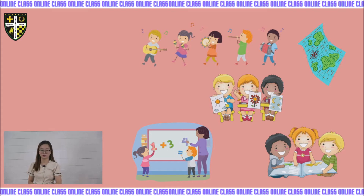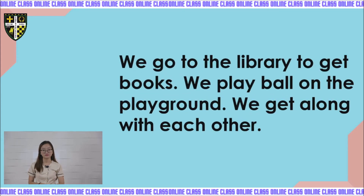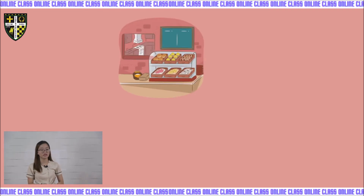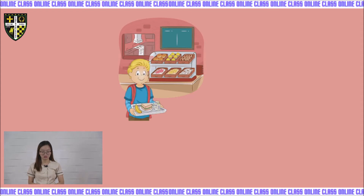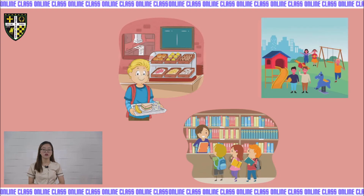We study together and play together with our classmates. We eat lunch in the cafeteria — cafeteria, class, is also called the canteen. We go to the library to get books. We play ball on the playground. We get along with each other. When we are in the library, we need to be quiet. In the playground, of course you play — we have time to play in our playground at school. This is the canteen or cafeteria, the library, and the playground.